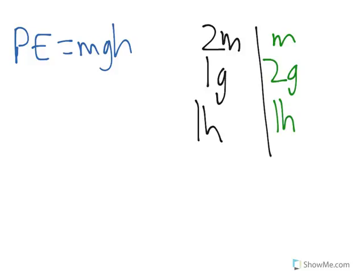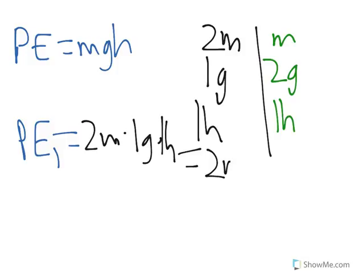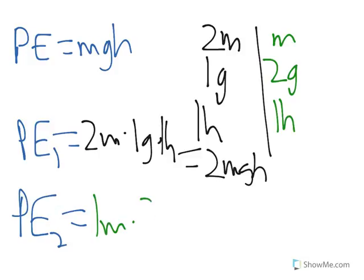So let's see, which one has a higher potential energy? Potential energy one equals two mass times one gravity times one height, is two MGH. Potential energy two. Instead, we have one mass, two gravity, and one height, also two MGH.